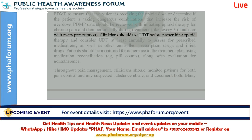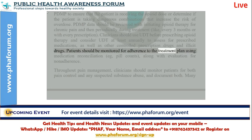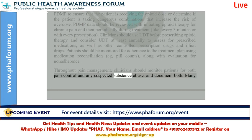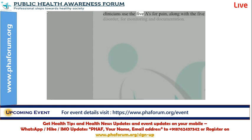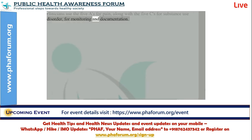Clinicians should use urine drug testing before prescribing opioid therapy and consider testing at least annually to assess the patient's progress. Patients should be monitored for adherence to the treatment plan using medication reconciliation — such as pill counts — along with evaluation for non-adherence. Throughout pain management, clinicians should monitor patients for both pain control and any suspected substance abuse, and document both. Many clinicians use the 5 A's for pain along with the 5 C's for substance use disorder for monitoring and documentation.